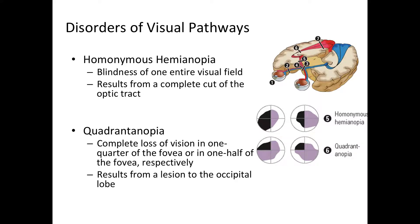Next is homonymous hemianopia, where you lose vision of one entire visual field — either left or right. In this example it is the left visual field. This happens when you cut the optic tract. It can also happen when you cut the lateral geniculate nucleus of the thalamus, or sometimes when you lesion part of V1. Cutting the optic tract results in loss of one entire visual field.